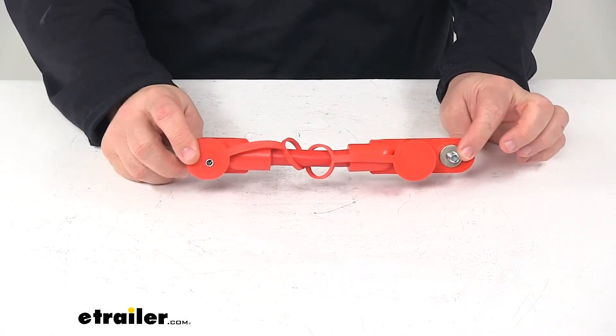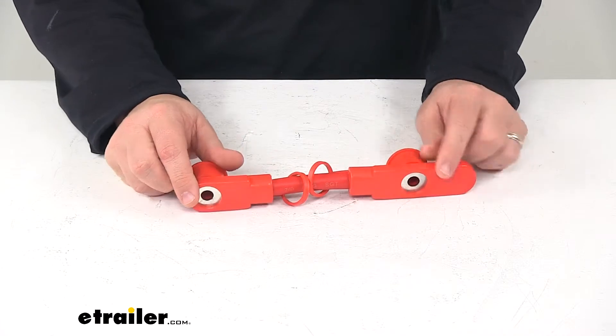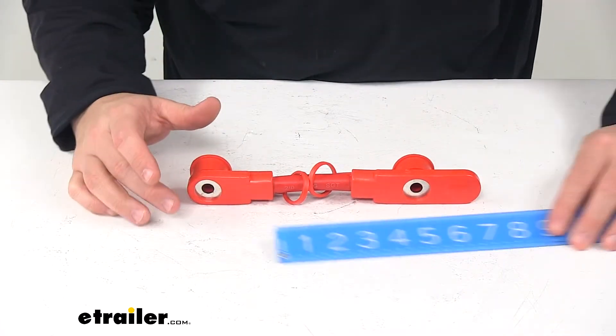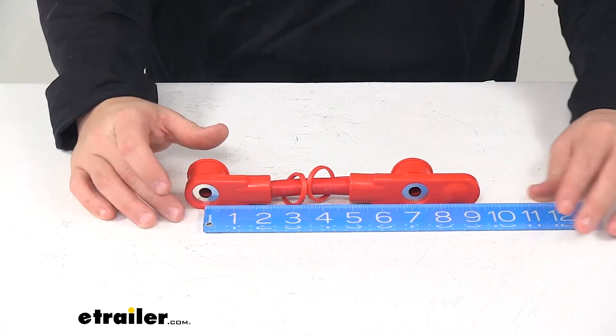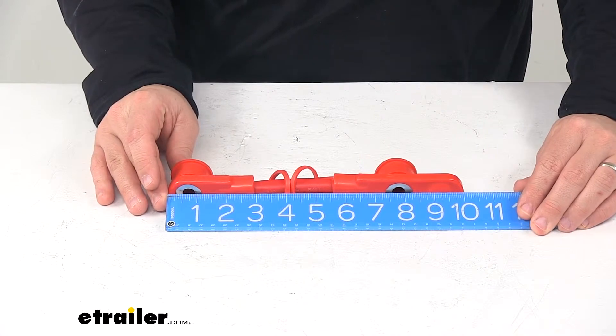It fits group thirty-one batteries with a three-eighth inch stud type. The terminals, which are these right here, are separated apart from one another on center by seven inches and then the overall length of the unit measures around ten inches.